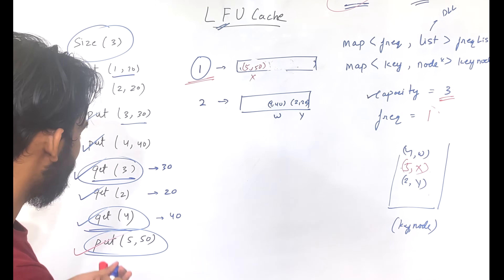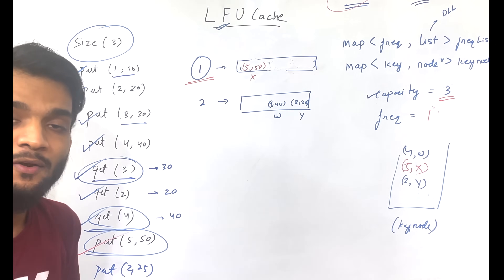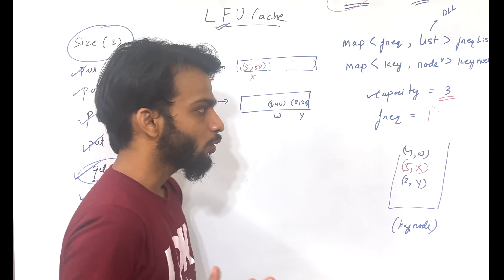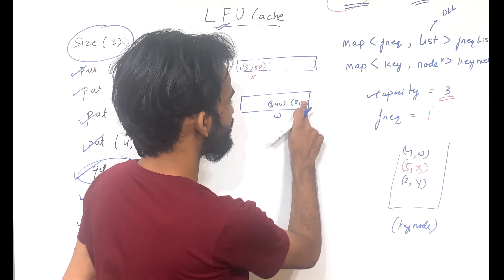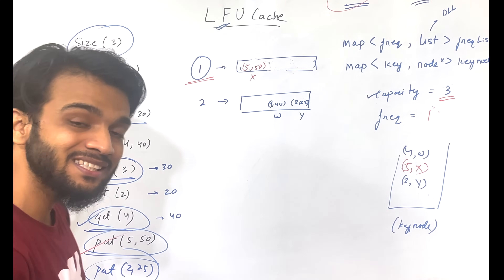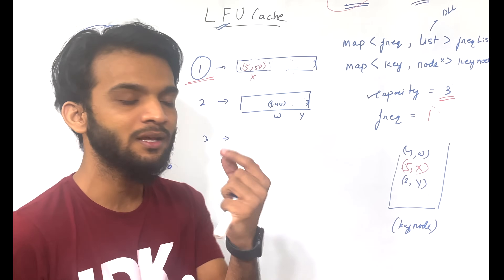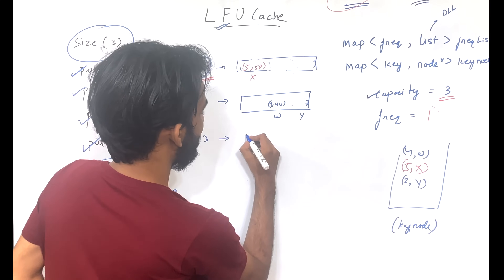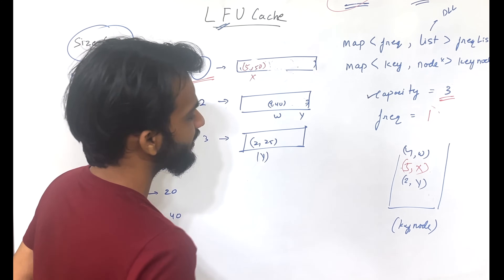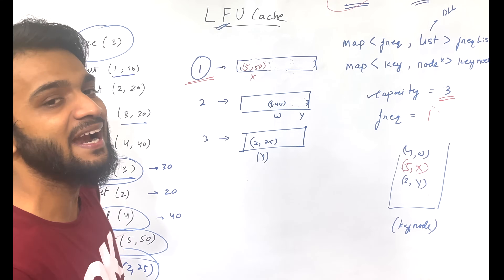Put(2, 25): key 2 already exists in the key-node map. So we just update the value from 20 to 25. But since we accessed it, the frequency increases by 1. We take node (2, 25) out of the current frequency list and move it to the next frequency list, placing it at the front — following LRU logic within that frequency bucket.